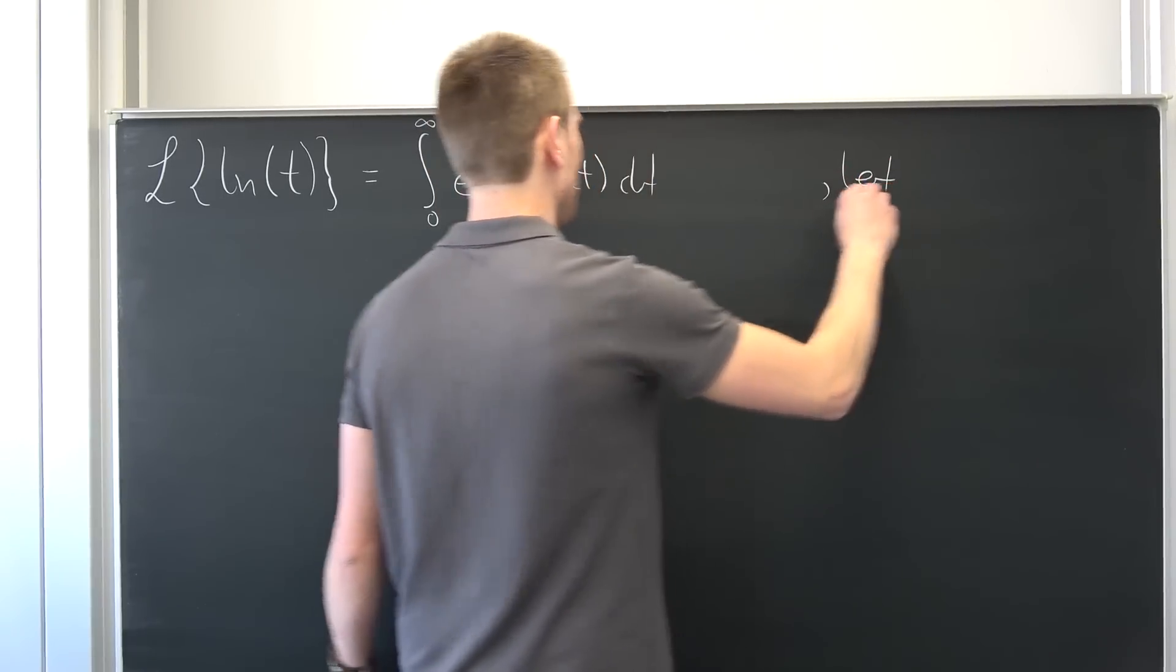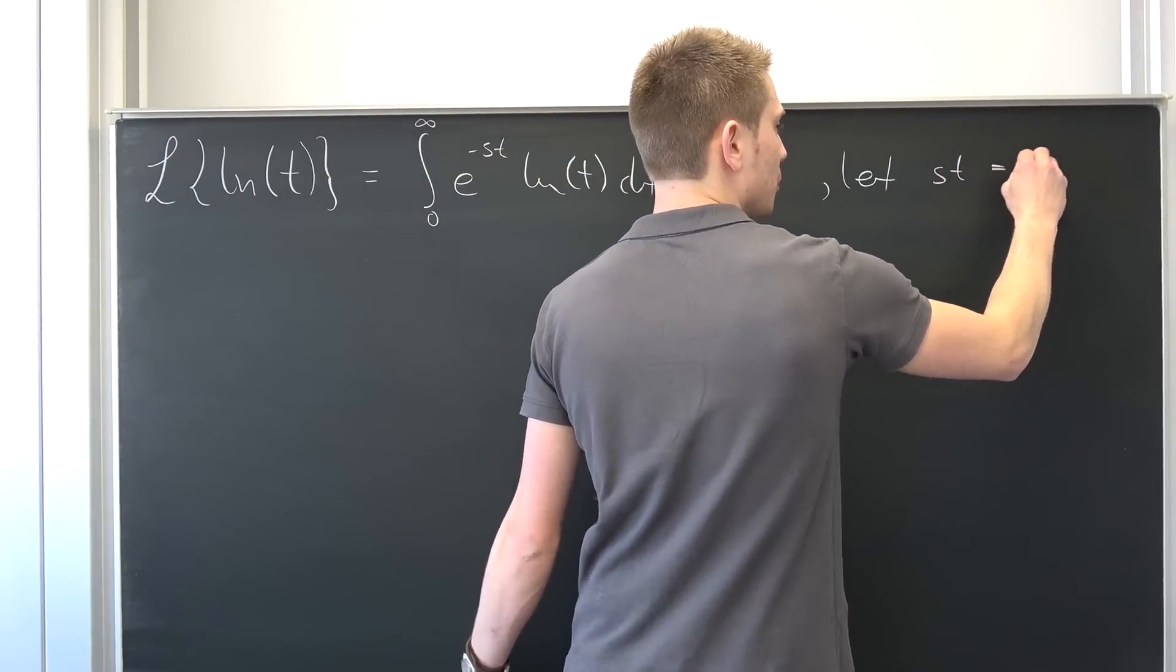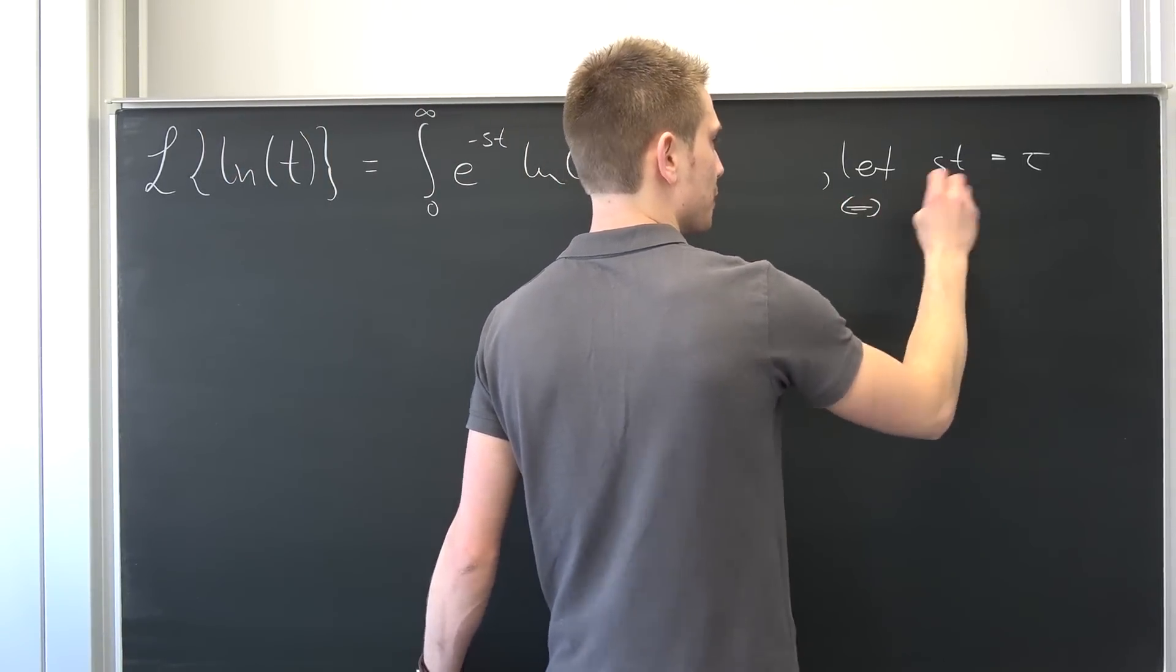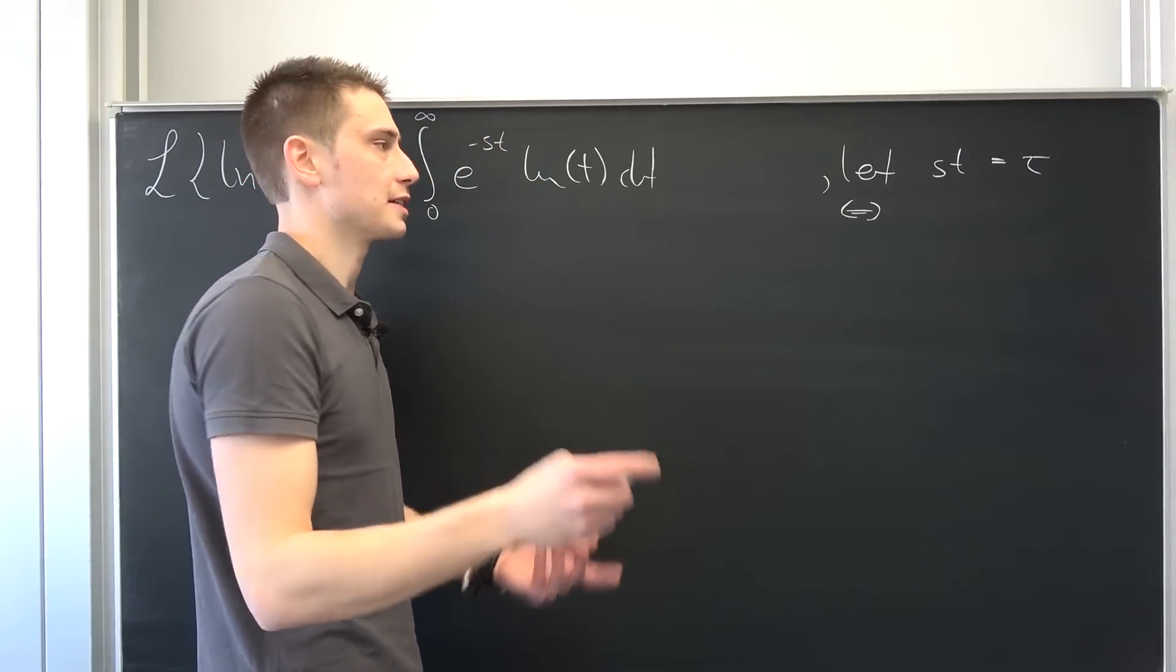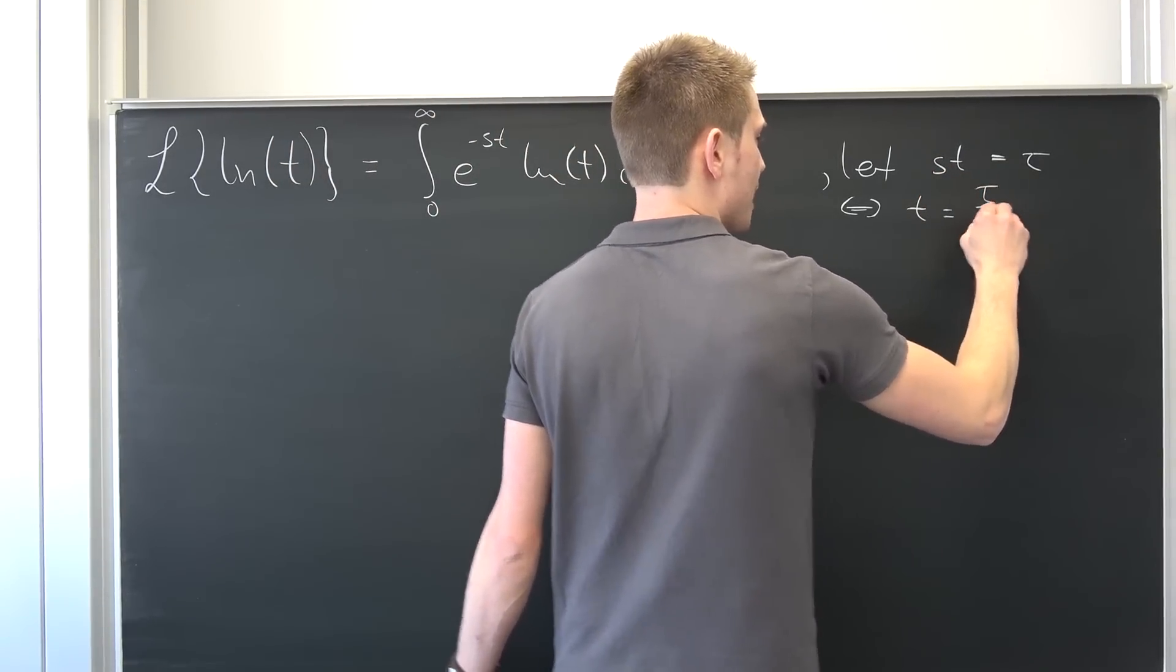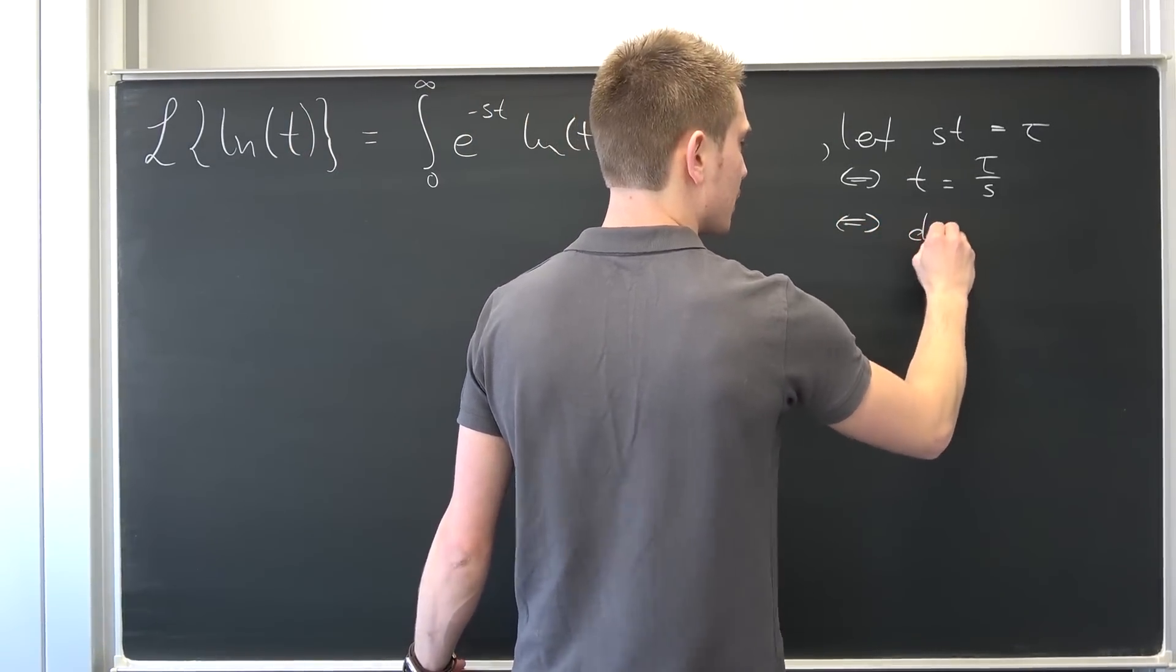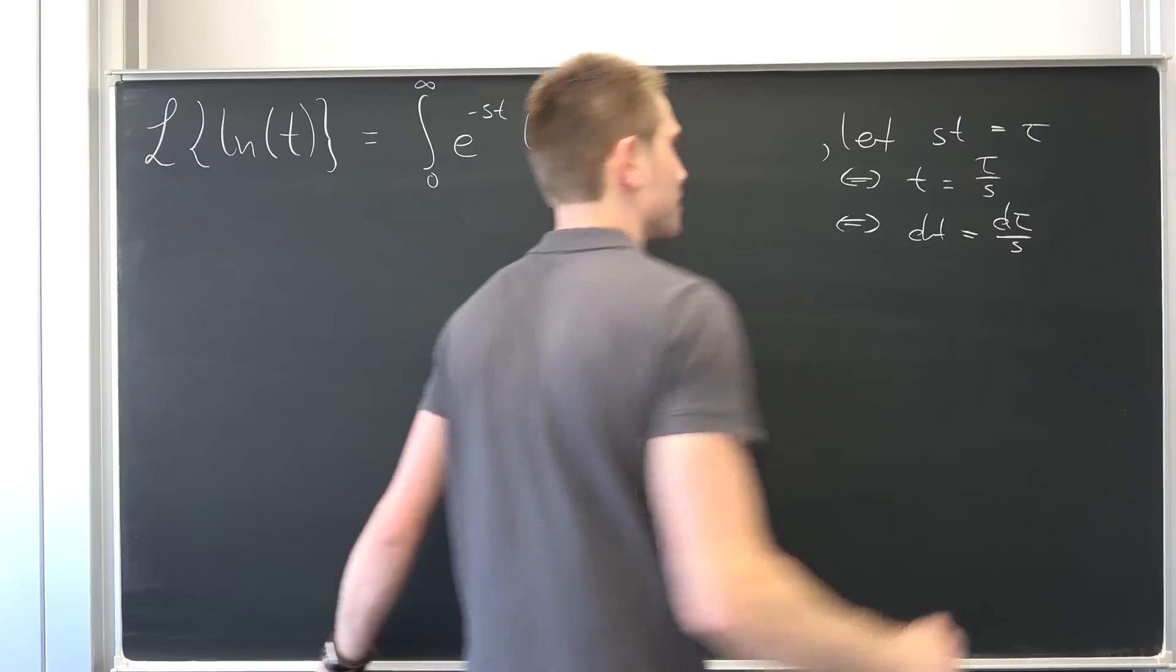Let this exponent right here be equal to tau for example. Meaning if s is not equal to zero or the real part is not equal to zero, yeah, if s is not equal to zero then we can divide both sides by s, t being equal to tau over s. Meaning if we differentiate both sides with respect to t, we are going to get that dt is nothing but d tau over s.